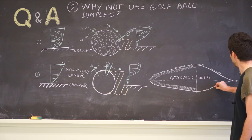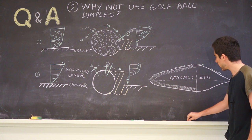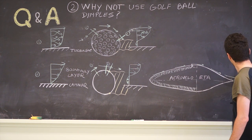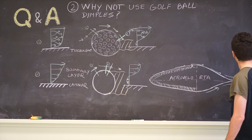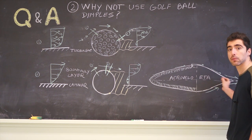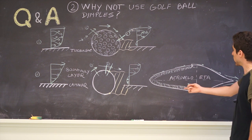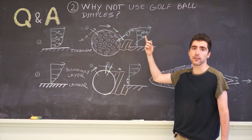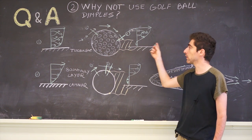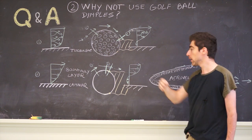which is designed to allow the air to come around on both sides and come together at the back without having any separation region. We are able to do that because we can choose whatever shape we want, whereas a golf ball has to be spherical, so they can't put a tail on it to make it go further. We can.